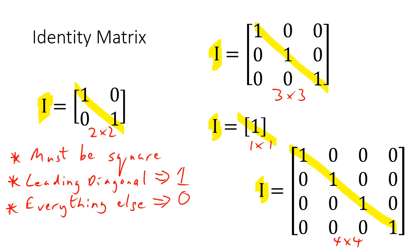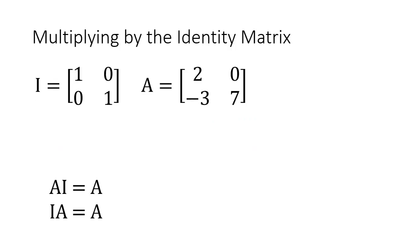The identity matrix acts like the number 1. If you think about 5 times 1 equals 5 and 1 times 5 equals 5, that's the same thing as A times I equals A, or I times A equals A. So we're going to look at doing I times A.